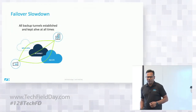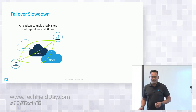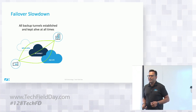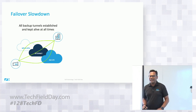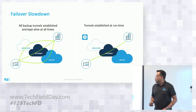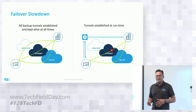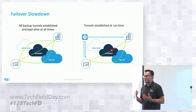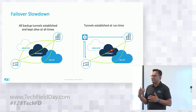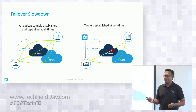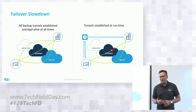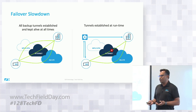Failover is slow in case of IPsec tunnels. All backup tunnels need to be established at all times if you want to failover immediately. One disadvantage carriers have told us is that it locks an IP address from the LTE network all the time — that many IP addresses are lost from the network because you're creating backup tunnels, sending pings, and keeping them alive. The other option is to establish tunnels at runtime, but then you need to exchange keys and involve the controller, which leads to delays. In real network settings, especially with LTE, this usually leads to long setup times and dropped sessions, particularly voice calls.